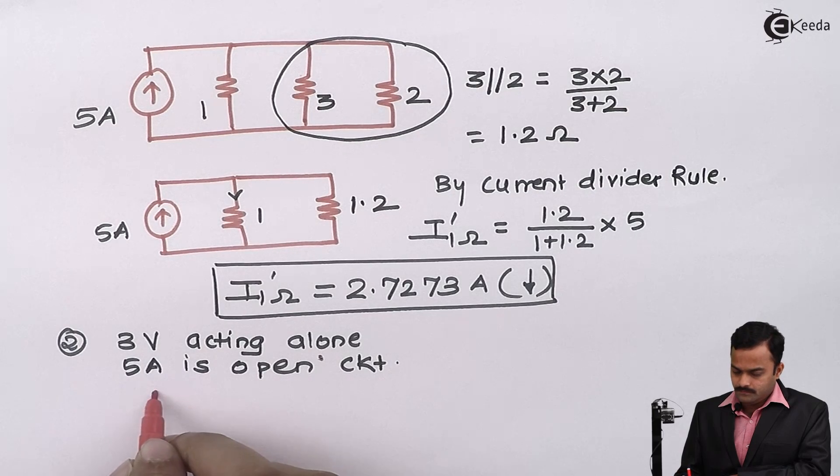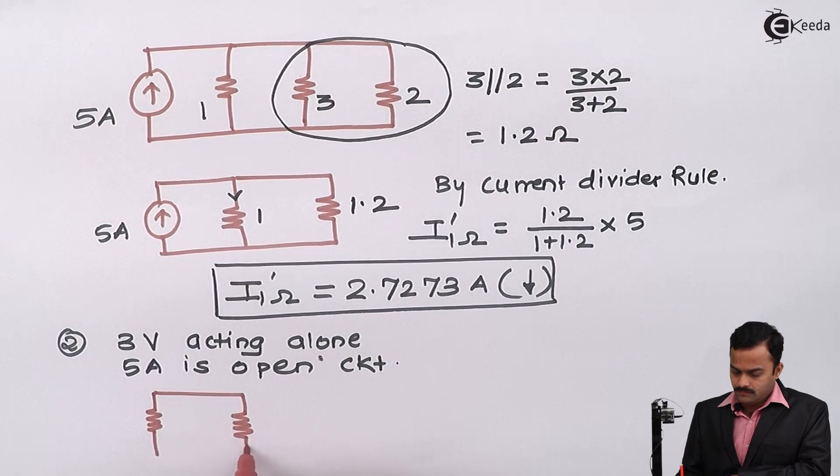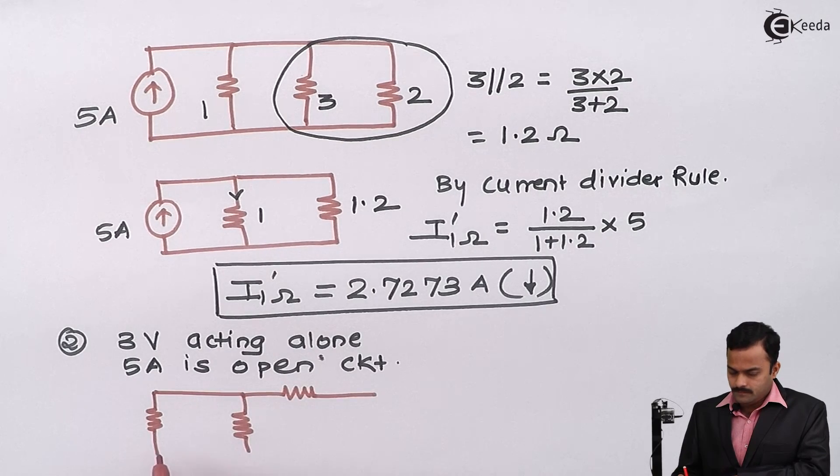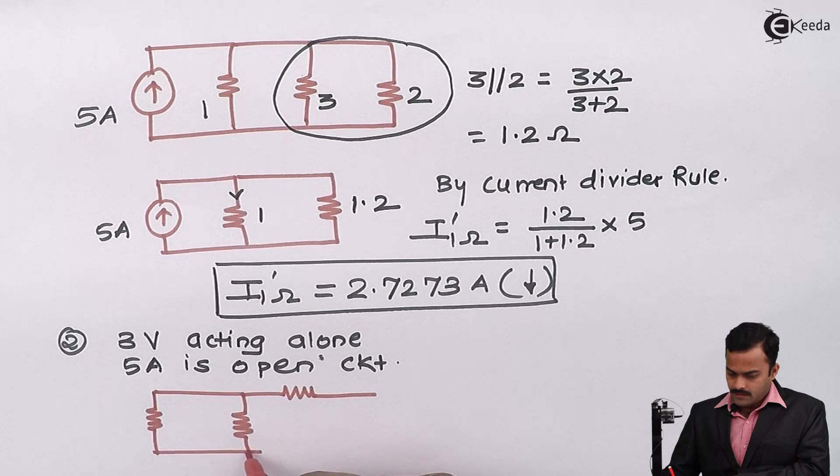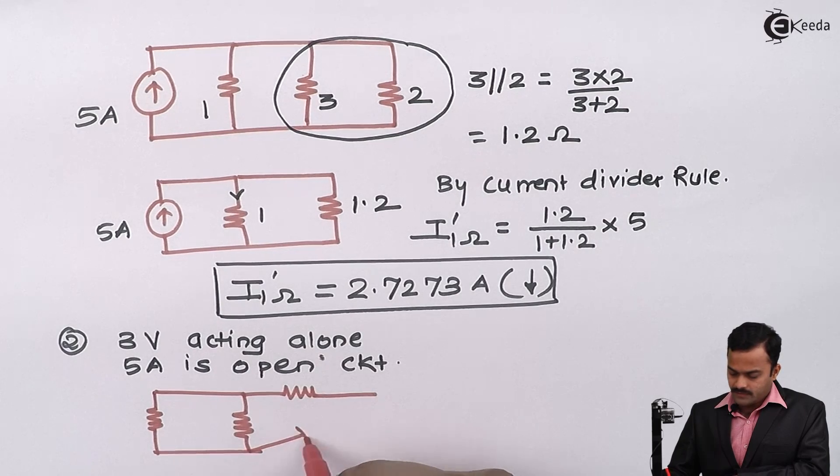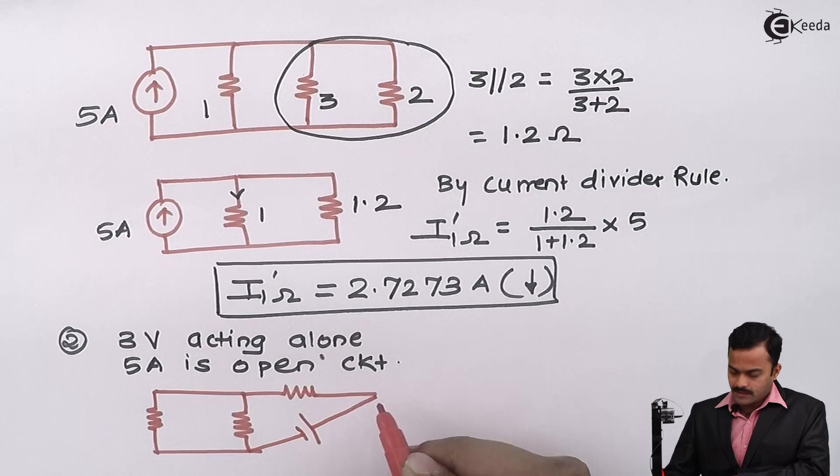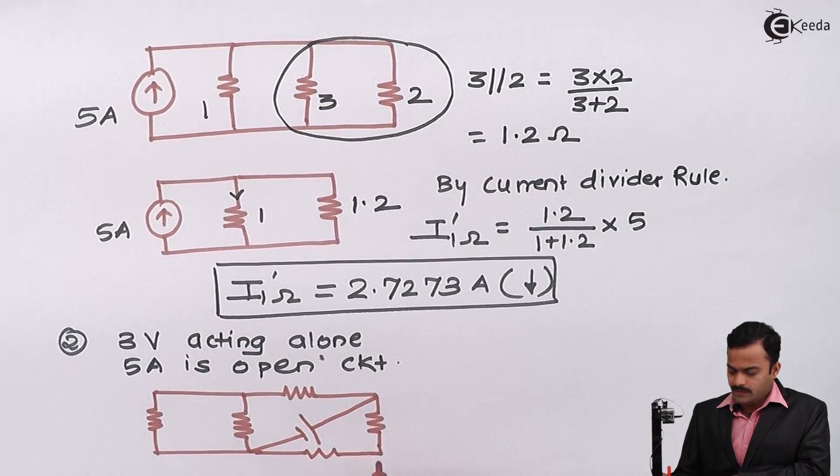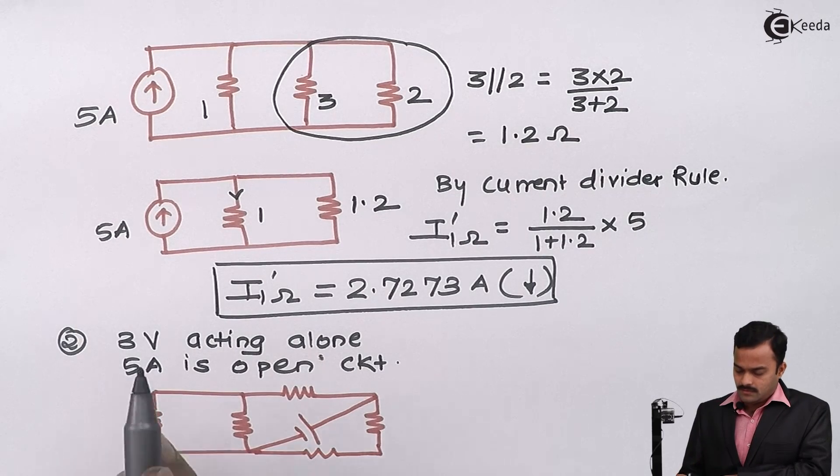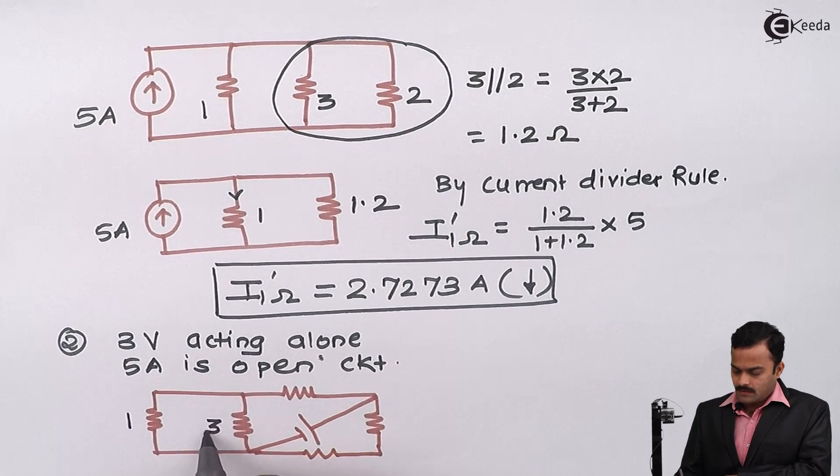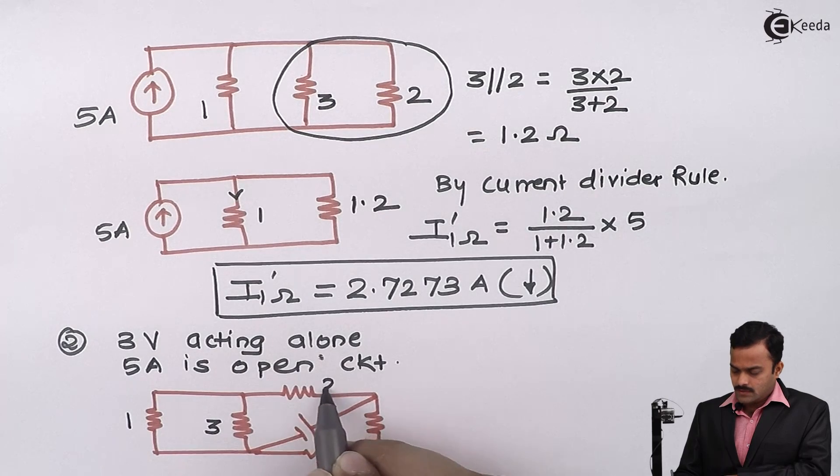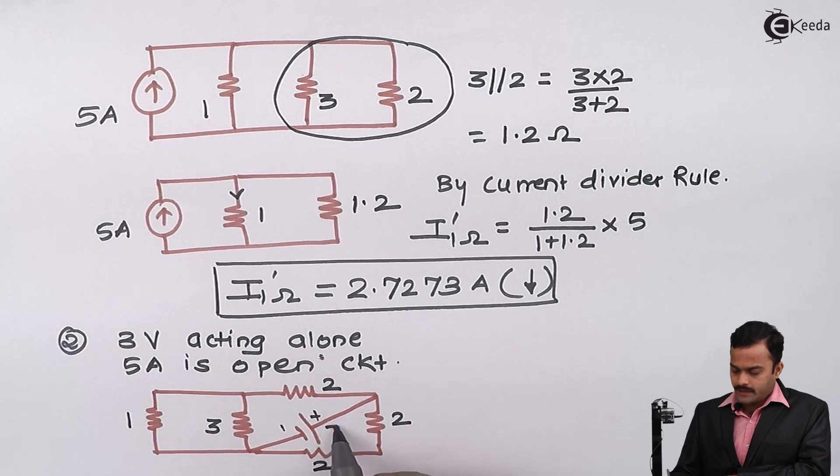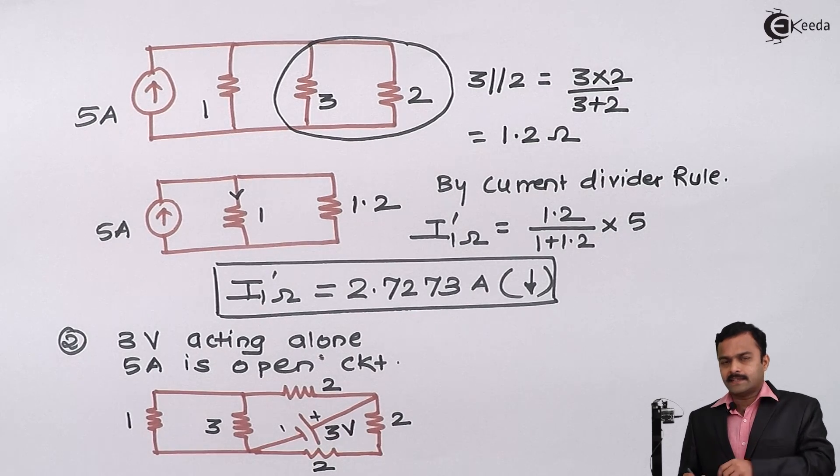1 ohm in parallel with 3 ohm, 2 ohm. Here, the battery of 3 volt will act alone and these are the 2 resistances which will be in series. Load resistance 3 ohm, this is 2, 2, 2 and battery of 3 volt is acting alone.